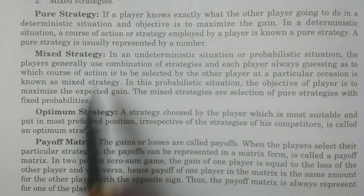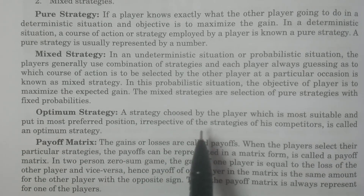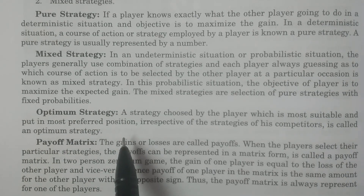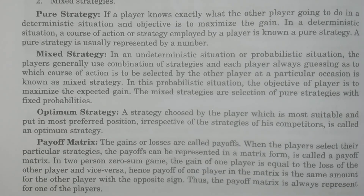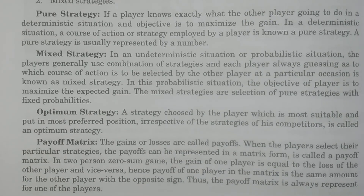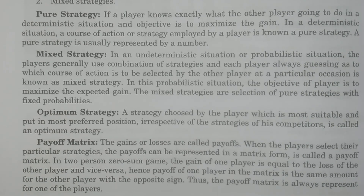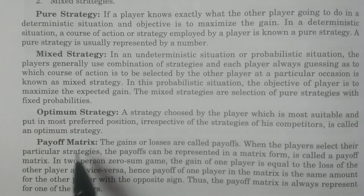Optimum strategy is the most suitable and most preferred position — the most comfortable position in the game. The ultimate strategy is the most optimal strategy: a player has a winning lead-out irrespective of the strategies of his competitors, giving him a leading or winning position. That is an optimal strategy.